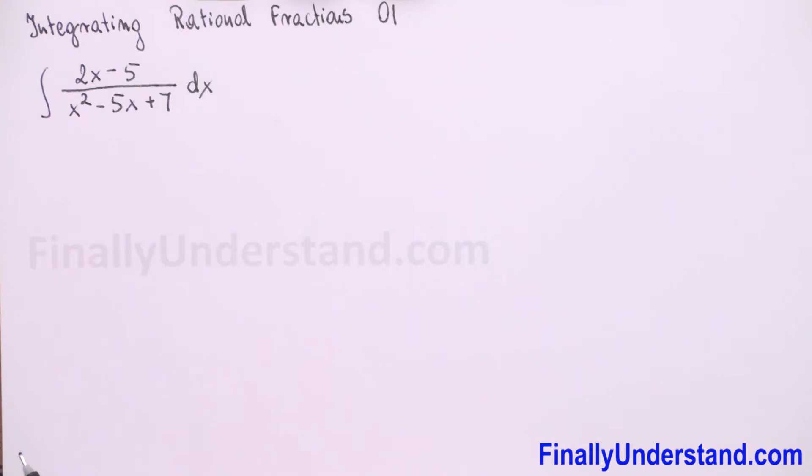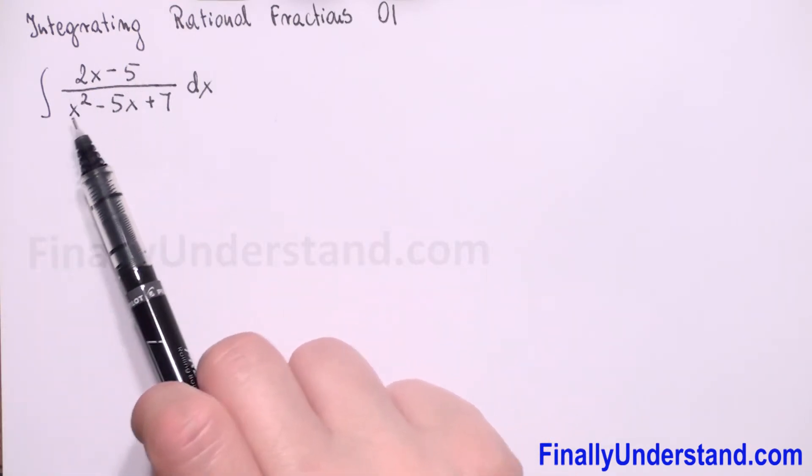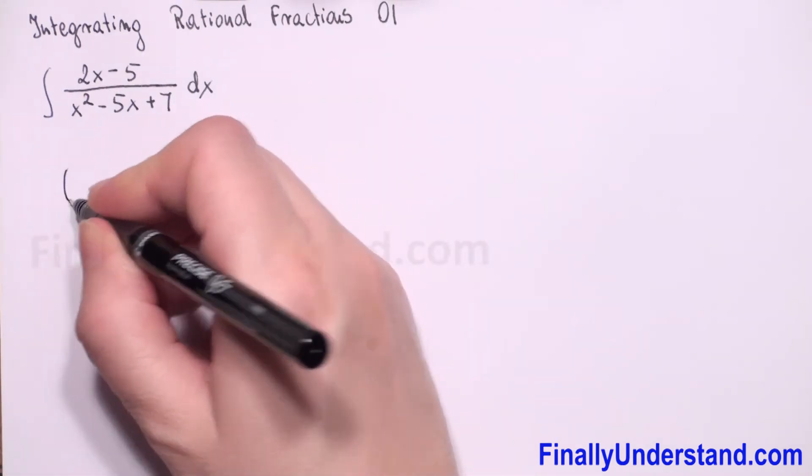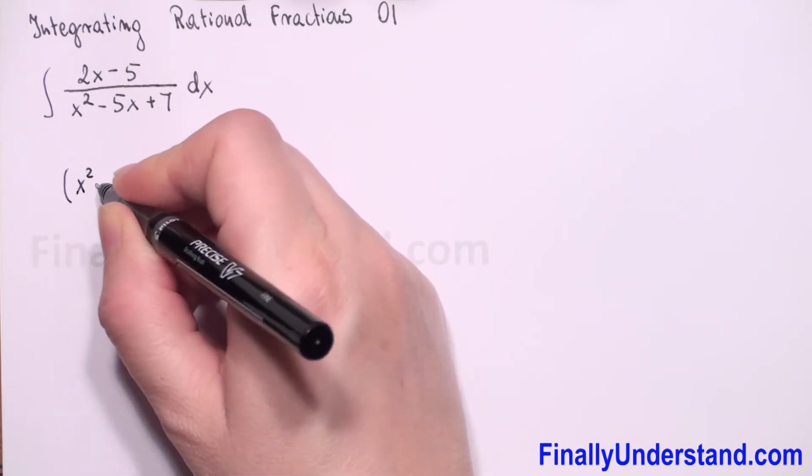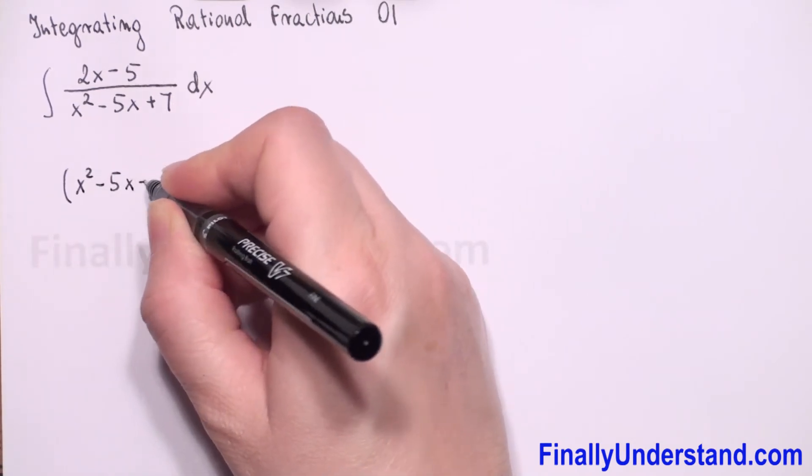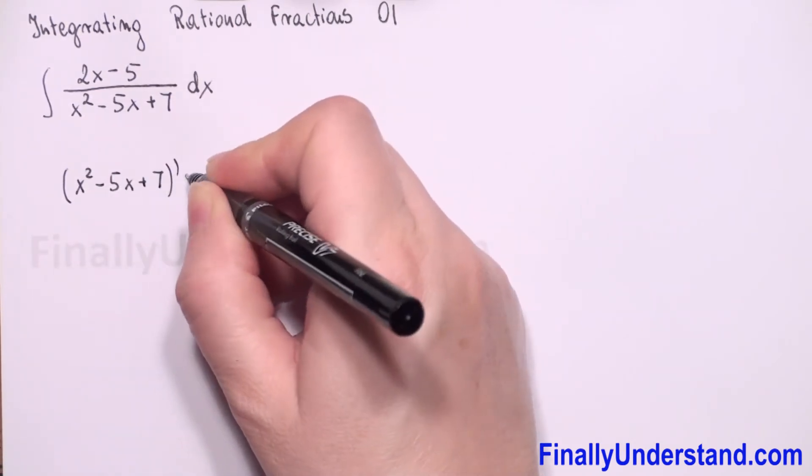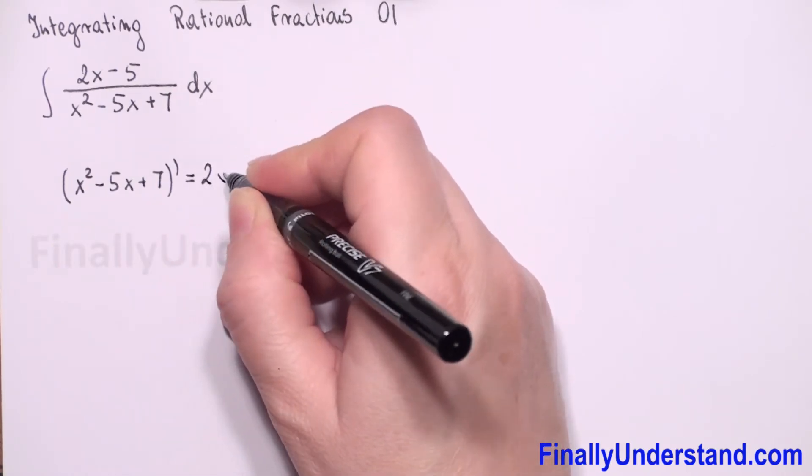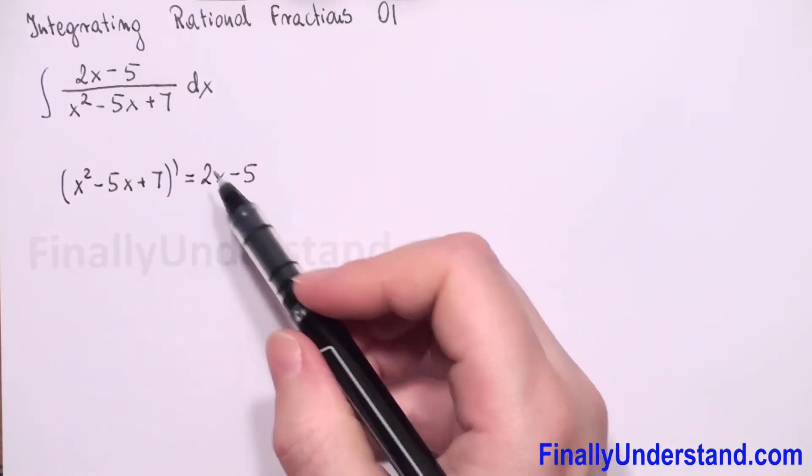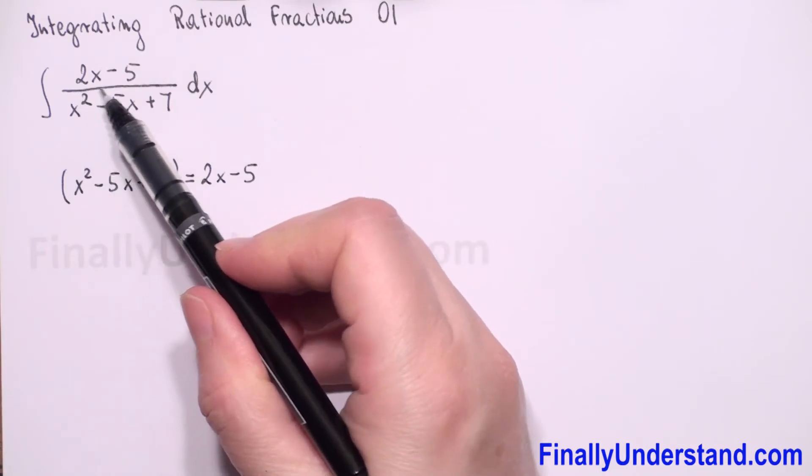What else? We see that in numerator we have derivative of denominator. When we take derivative of x square minus 5x plus 7, this is equal to 2x minus 5. Exactly the same expression which we have in numerator.